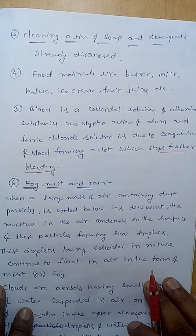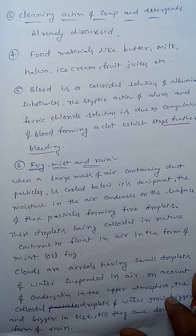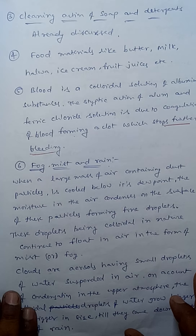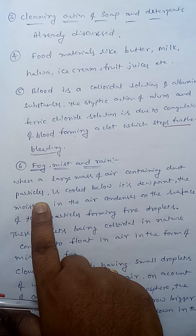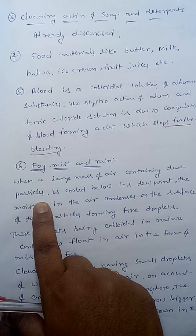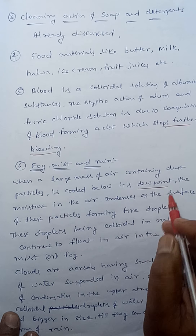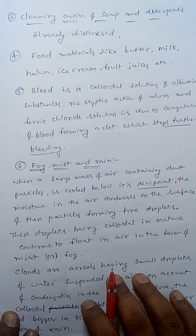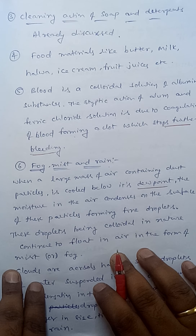Fog, mist, and rain are also colloids around us. When a large mass of air containing dust particles — where air is the dispersion medium and dust particles are the dispersed phase — is cooled below its dew point, condensation occurs. The dew point is the atmospheric temperature below which water droplets condense.